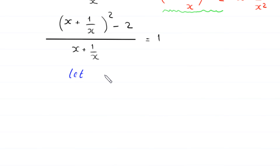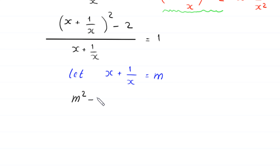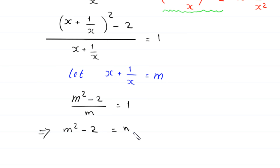We suppose that x plus 1 over x is equal to m and substitute m into the equation. This gives m squared minus 2 divided by m is equal to 1. Multiplying both sides by m, we get m squared minus 2 equals m. Moving m to the left-hand side gives m squared minus m minus 2 is equal to 0.